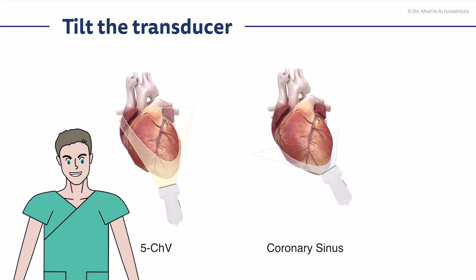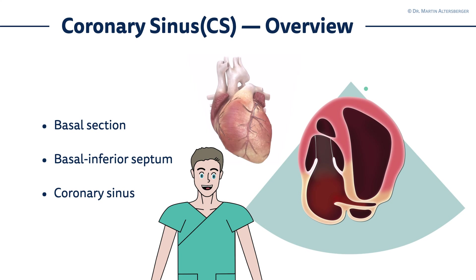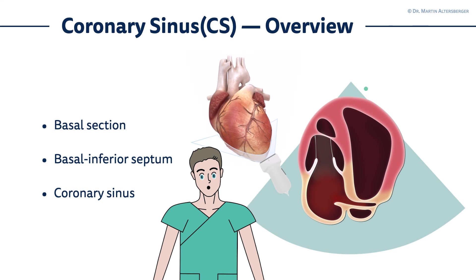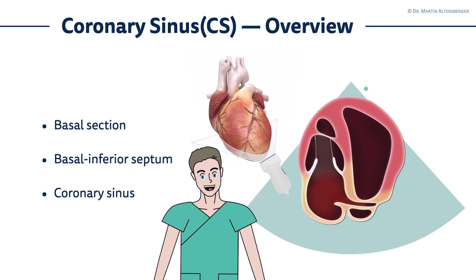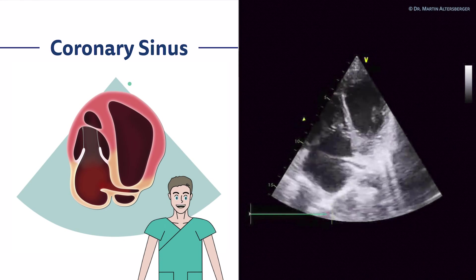To obtain the coronary sinus view, you tilt the transducer the other way — for the five-chamber view you tilt more cranially (upwards), whereas here you tilt more caudally towards the coronary sinus. You then see the most basal parts: the basal inferior septum, the coronary sinus, and the most basal portions of the ventricle.